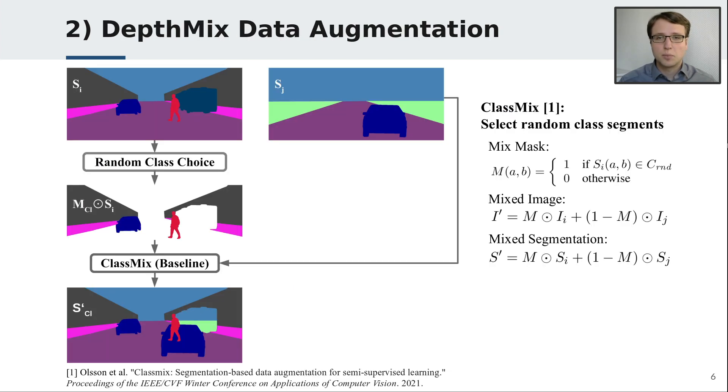Second, we propose a mixing strategy based on the geometry of the scene. It is inspired by several works that mix up images and their pseudo-labels for semi-supervised learning. The strongest one is ClassMix, which generates the mix mask from randomly selected classes of the predicted segmentation.